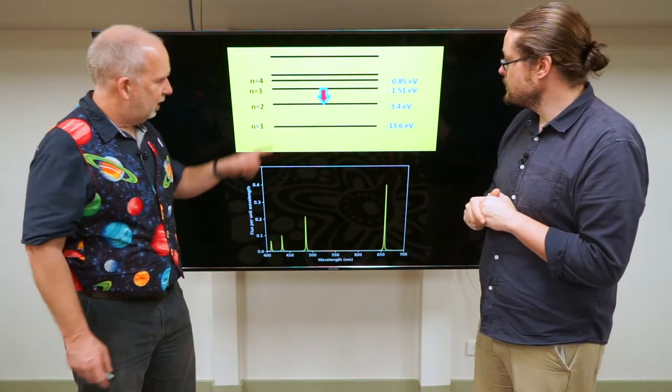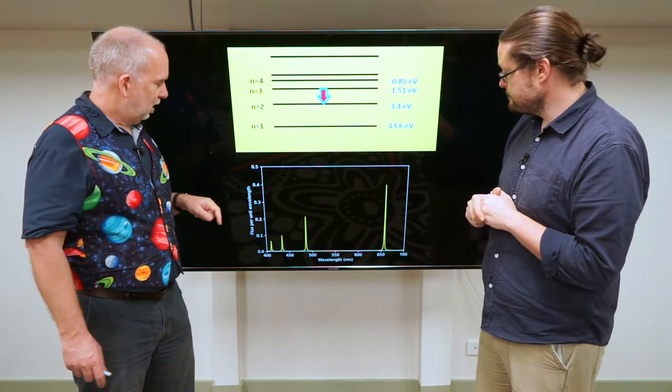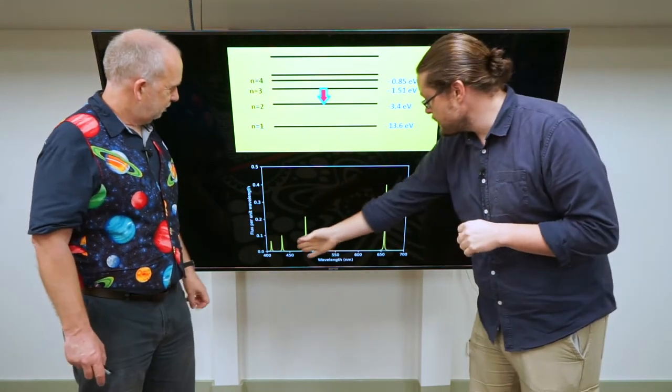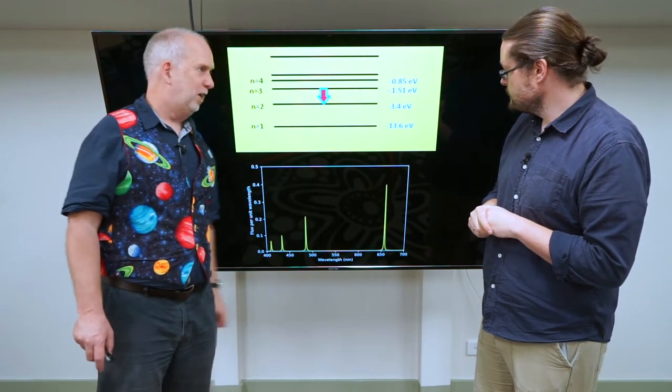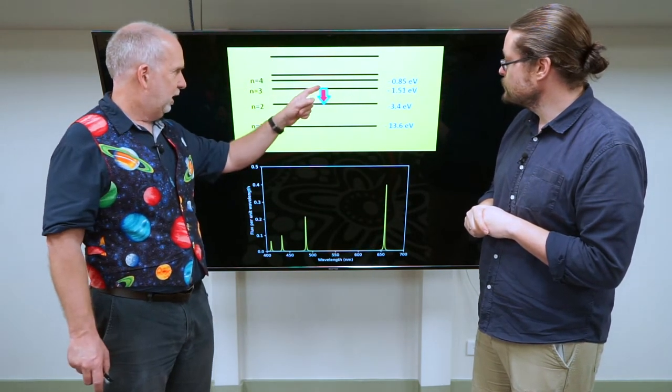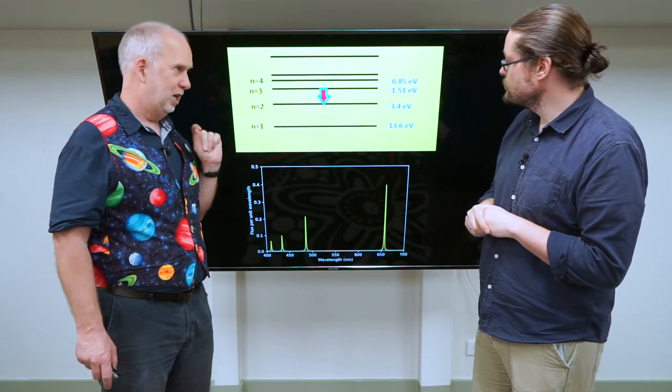Yes, so for example here's our energy levels of hydrogen. And this was the hydrogen spectrum we were looking at earlier. So for example this spike here, which makes hydrogen clouds look red, is due to electrons jumping from the third energy level to the second energy level.